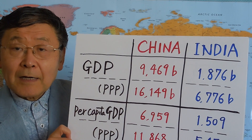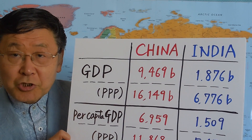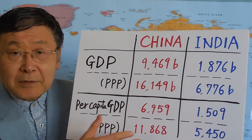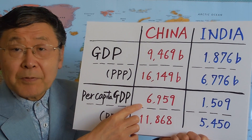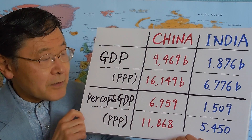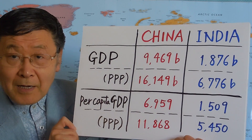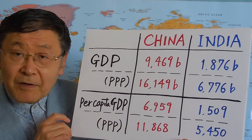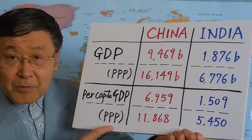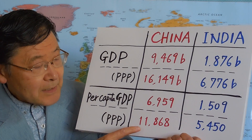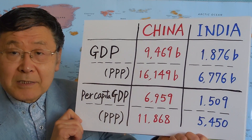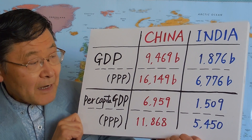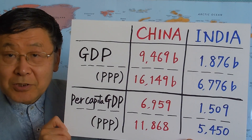Since China and India have almost the same size of population, if you divide these numbers by the number of people, you get similar per capita figures. Per capita GDP in China is $6,959 — about $7,000 per person per year. Whereas in India that's only $1,500, about one-fourth to one-fifth of China's level. But in PPP terms, China has $11,868 per person, whereas India has a little less than half of that — $5,450. This is the situation as of 2013.